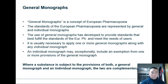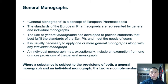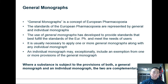The third section is general monographs — a concept from the European Pharmacopoeia. The standards of EP are represented by general and individual monographs, and the use of general monographs has provided standards that best fulfill the requirements of the European Pharmacopoeia and also meet the needs of users. It is usually necessary to apply one or more general monographs along with any individual monograph, and any individual monograph may exceptionally include an exemption from one or more provisions of the general monograph. In most cases where a substance is subject to both a general monograph and an individual monograph, the two are complementary.